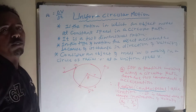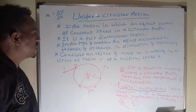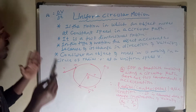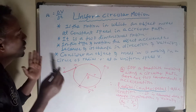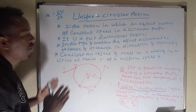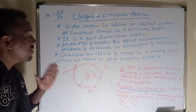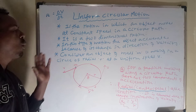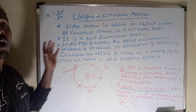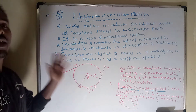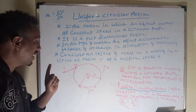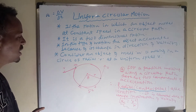Because the direction of velocity is always changing, there are two components of acceleration that exist while the object is moving along a circular path.